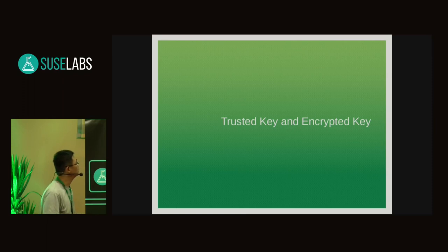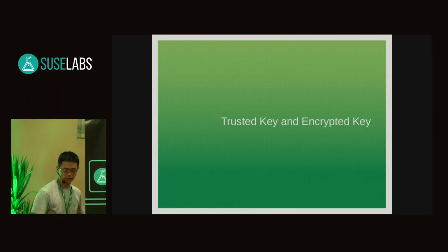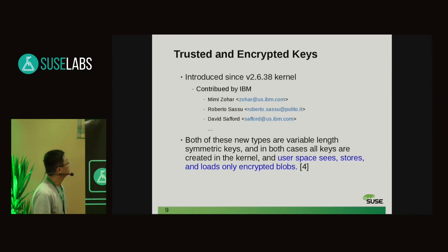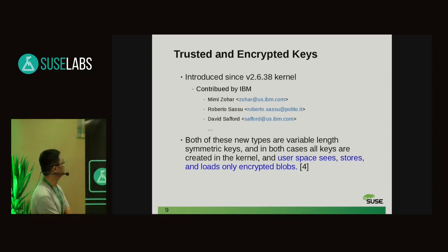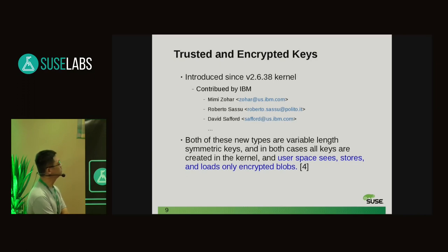I will introduce the trusted key and the encrypted key — two different kinds of keys. Both were introduced in the 2.6.38 kernel as a contribution by IBM. Both are new key types generated by the kernel; they are symmetric keys and user space can only see, store, and load the encrypted blob, which means the secret in the payload cannot be exposed. So user space can only see the encrypted key but cannot touch the real payload.